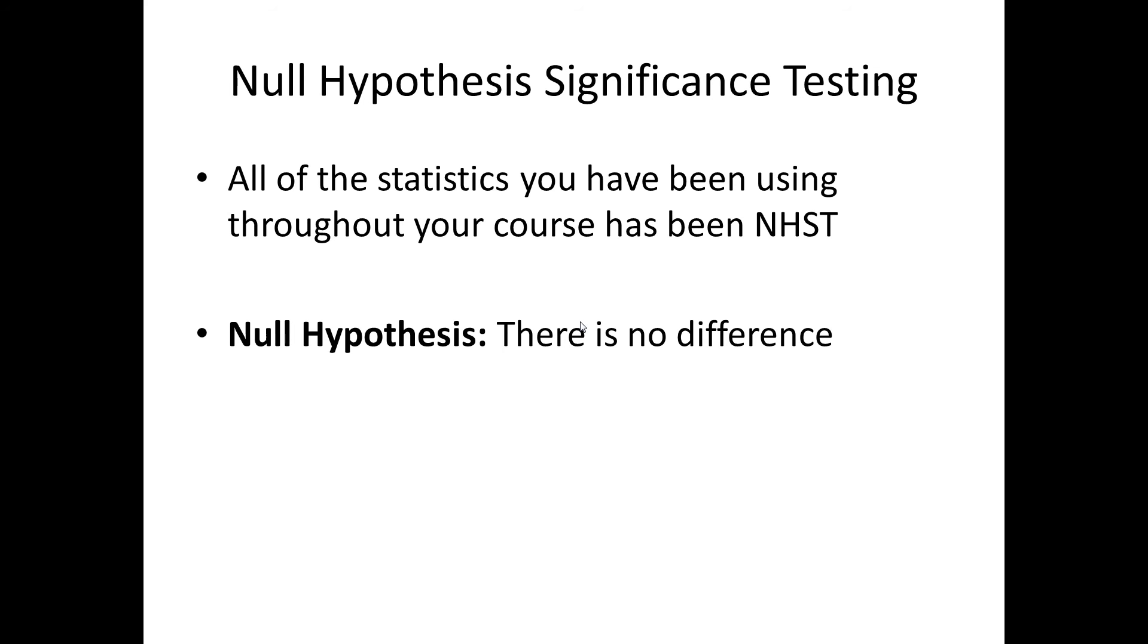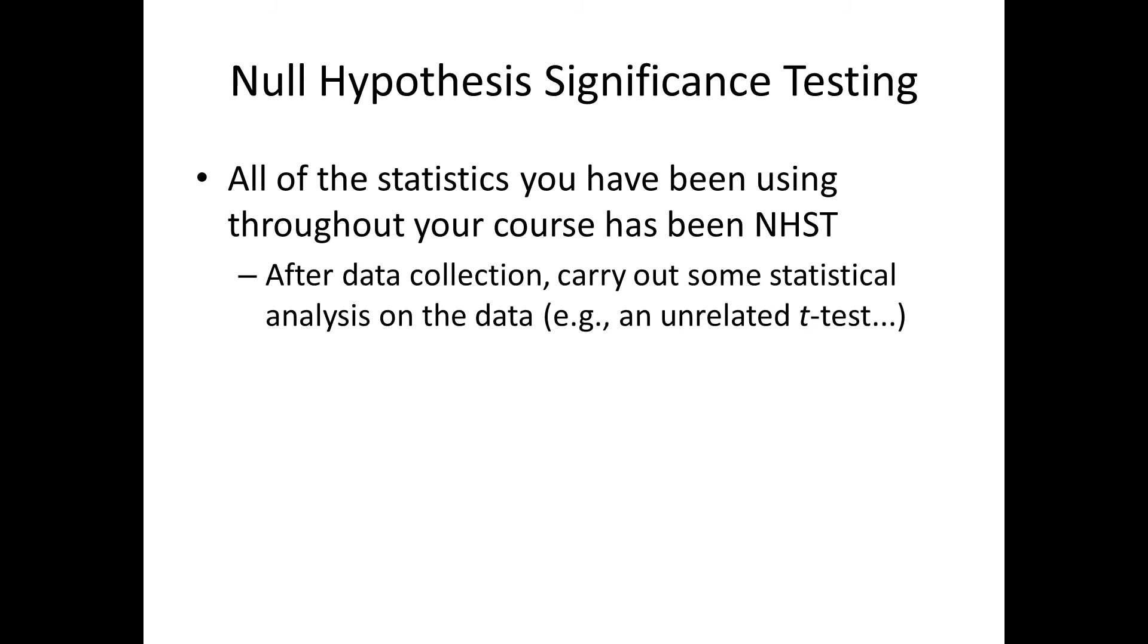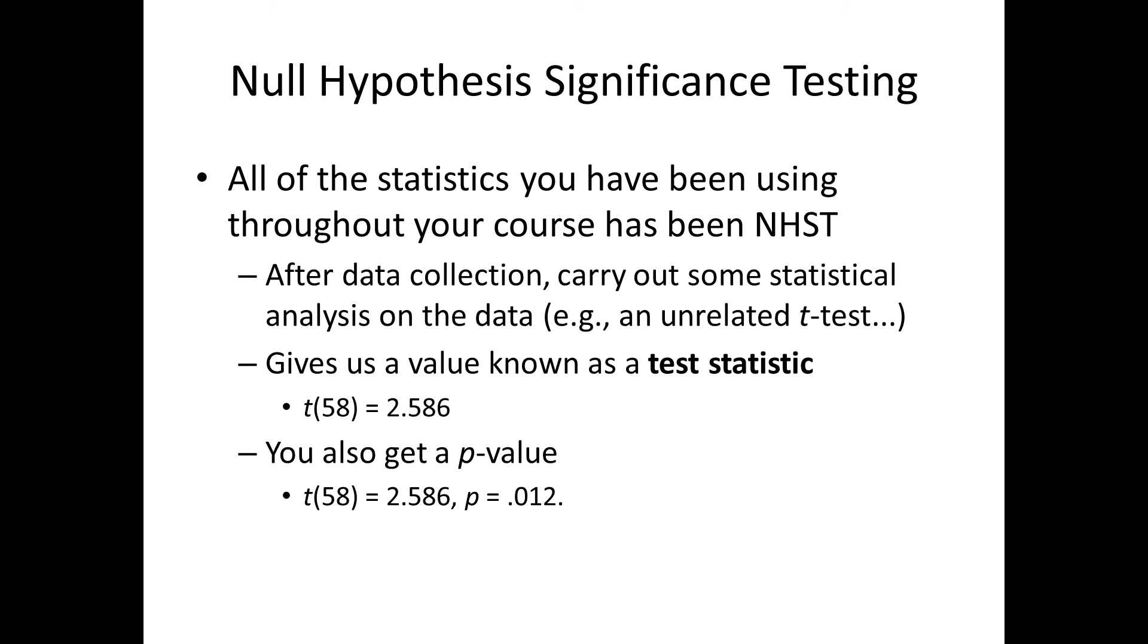So what are the steps of NHST? So the first step is after data collection you carry out some statistical analysis on the data. In this case we would do an unrelated t-test but this doesn't matter too much. So we do a t-test. This gives us a value known as a test statistic. So this is where you'll see written t equals 2.586. 2.586 is known as our test statistic. But in SPSS etc we also get another piece of information which is the p-value. So together with the test statistic of 2.586 we'd see that the p-value equals 0.012.